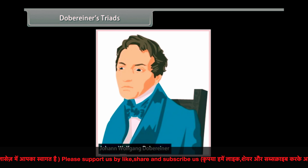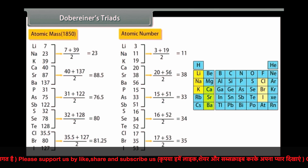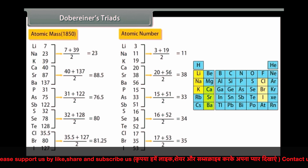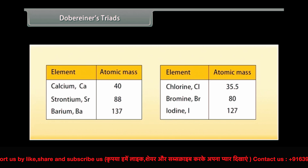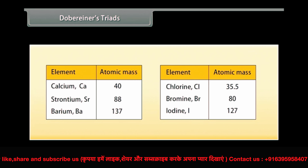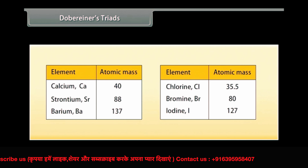In 1829, Dobereiner, a German scientist, made groups of three elements each based on their properties. He named them triads. He observed that the atomic mass of the middle element of a triad was equal to the arithmetic mean of the atomic masses of the other two elements. For example, in a triad of calcium (Ca, 40), strontium (Sr, 88), and barium (Ba, 137), the mean of 40 and 137, which is (40+137)/2 = 88, equals the atomic mass of strontium.